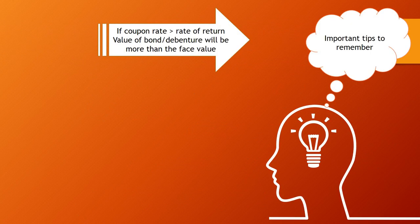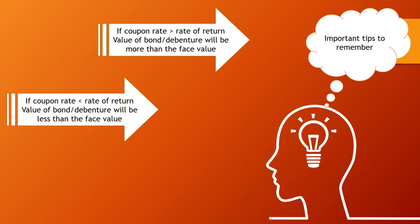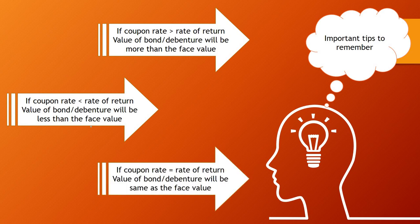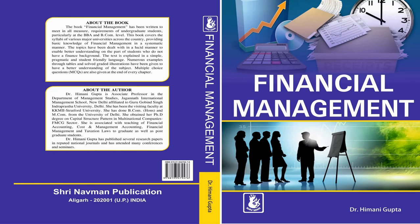To summarize the key relationships: if the coupon rate is greater than the rate of return, the bond value exceeds the face value. If the coupon rate is less than the rate of return, the bond value is less than the face value. In this example, the coupon rate was 12% and the rate of return was 14%, so the value of Rs. 929 is less than the face value of Rs. 1000. If the coupon rate equals the rate of return, the bond value equals the face value. Thank you.